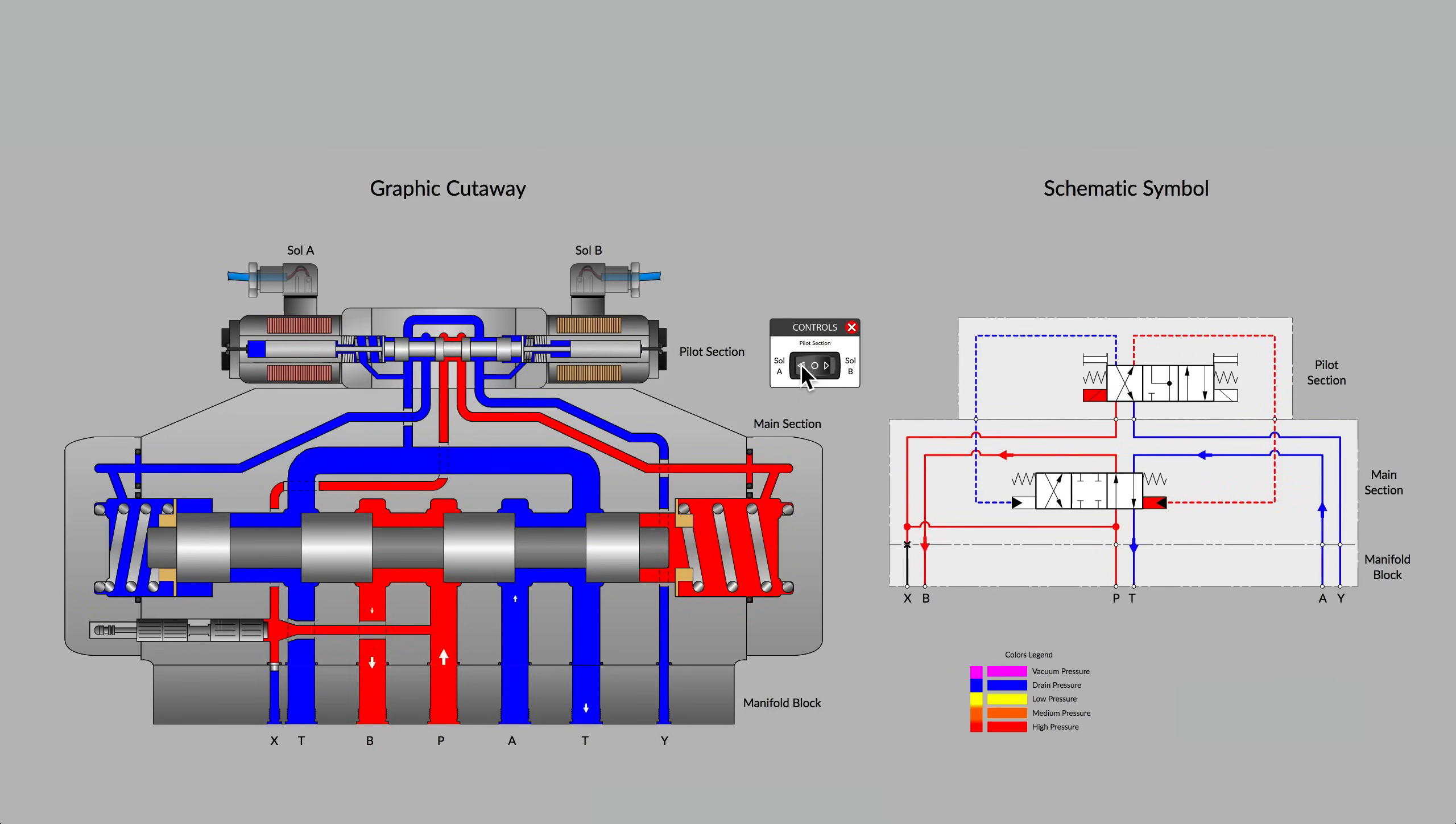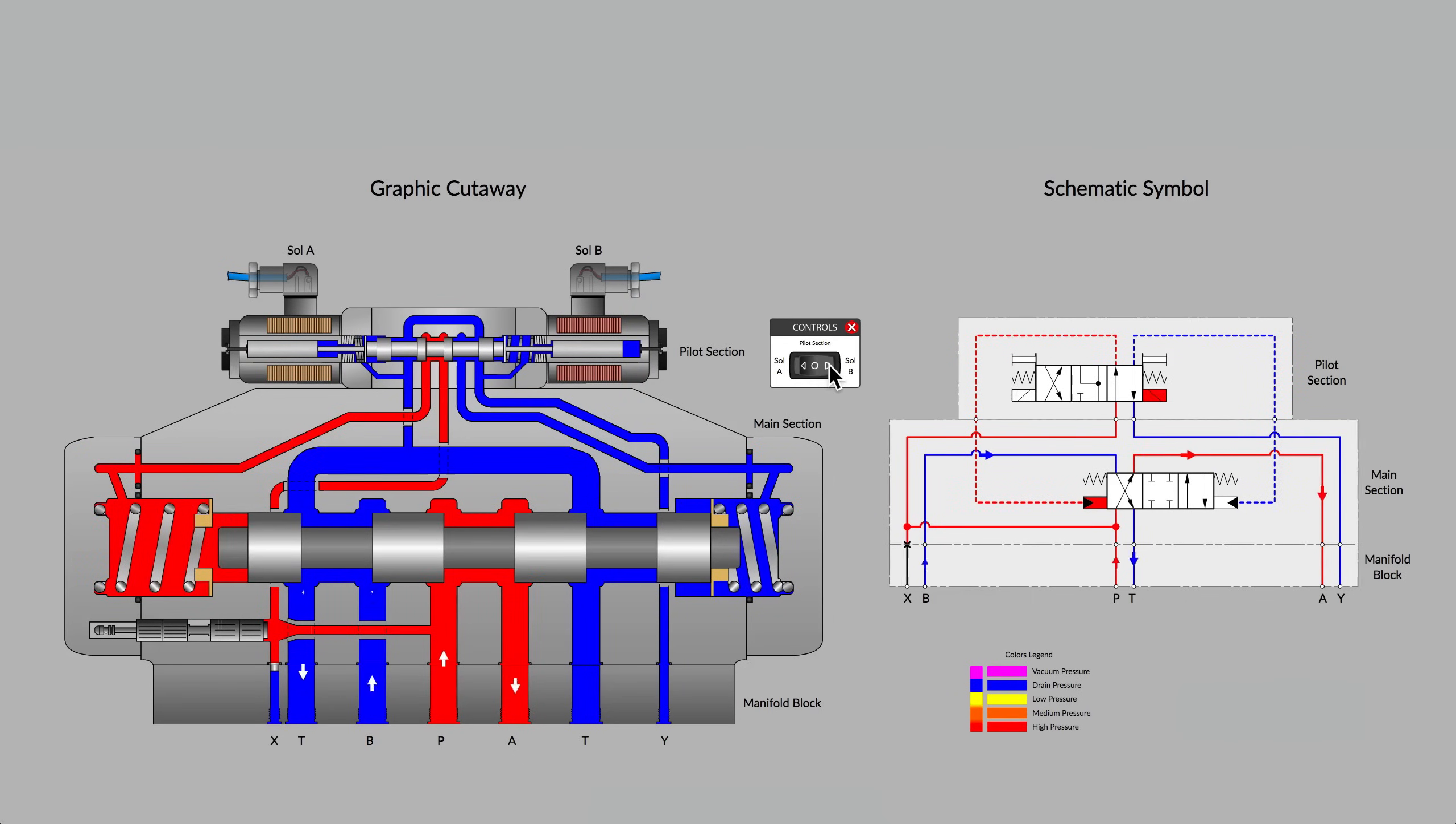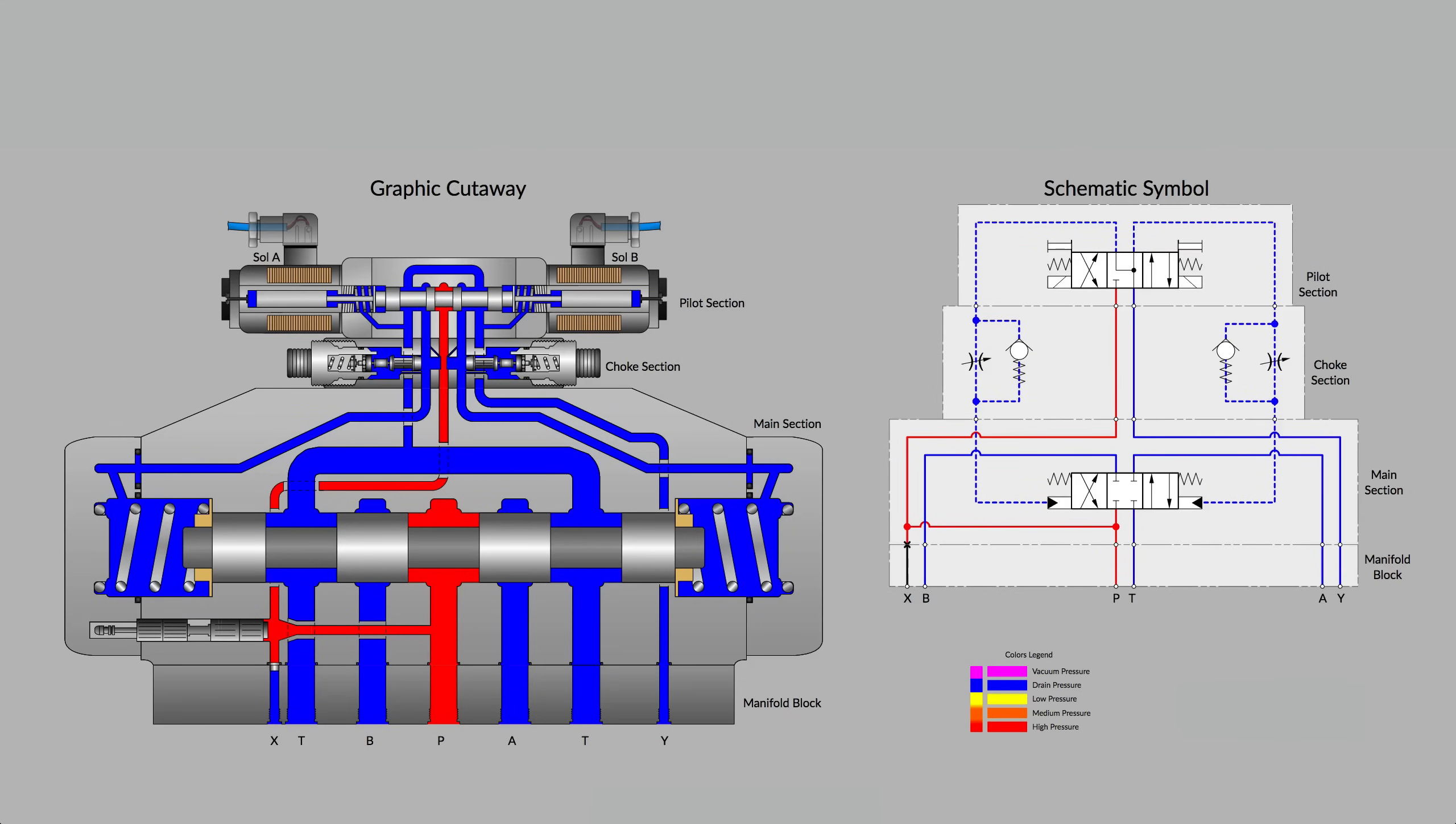That's a basic introduction to solenoid controlled pilot operated directional control valves. In a future video we'll show you more about why a choke section, a couple of flow controls if you will, are often installed between the pilot section and the main section.